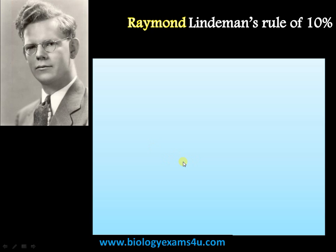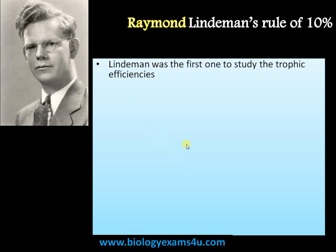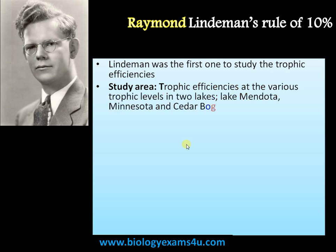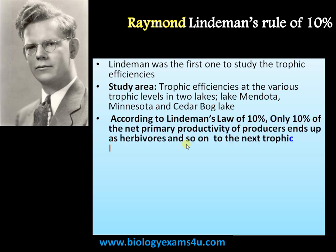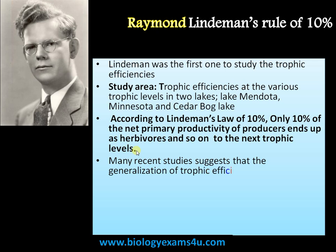Raymond Lindeman was the first one to study the trophic efficiencies of different ecosystems. His study areas were Cedar Bog Lake (Minnesota) and Lake Mendota. According to Lindeman's law of 10%, only 10% of the net primary productivity of producers is transferred to the herbivores and to the next levels.